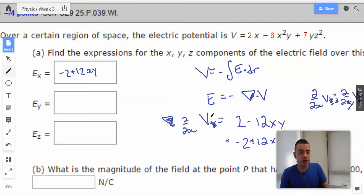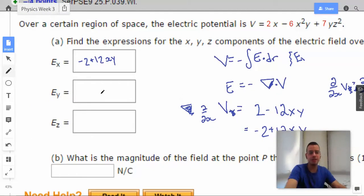Now we're going to do the same thing for y. Derivative of 2x with respect to y will be 0, so I'm not going to worry about that. Negative 6x squared y with respect to y will be negative 6x squared. So I'm going to take the negative of that. So Ey will be 6x squared. And then the derivative of 7yz squared, negative will be 7z squared, because we treat everything that's not a y as a constant.